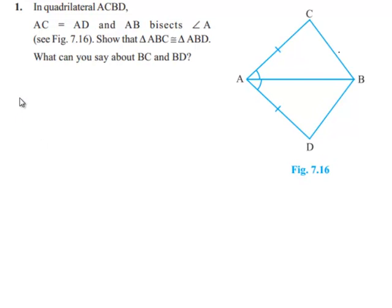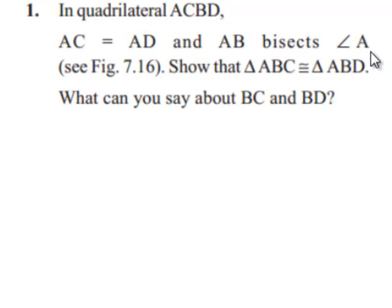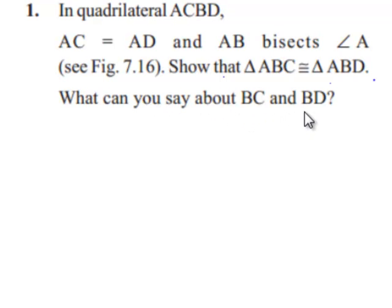Coming to the first problem: in quadrilateral ABCD, AC is equal to AD and AB bisects angle A. Show that triangle ABC is congruent to triangle ABD, and what can you say about BC and BD?